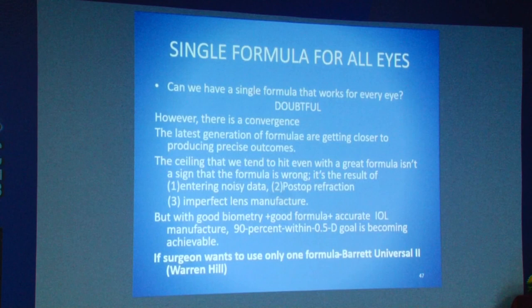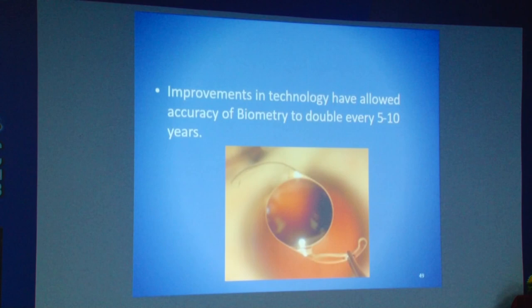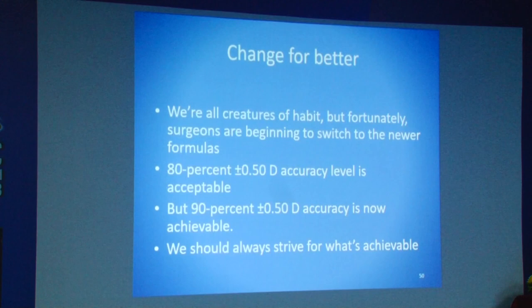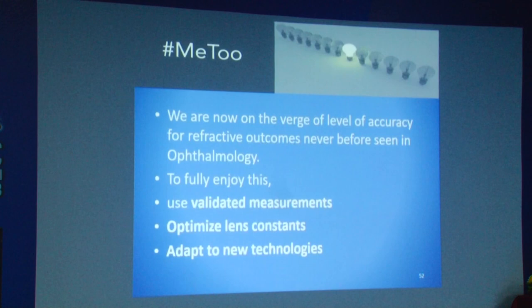Have we reached a stage where we can use a single formula for all eyes? The closest formula that fits the bill is Barrett Universal 2. These newer formulas are outperforming earlier generation formulas. Improvements in technology have allowed accuracy of biometry to double every 5 to 10 years. 80% accuracy was acceptable in older times, but now 90% accuracy is achievable — strive for what is achievable and not settle for what is acceptable. Smartness is learning not only from your own mistakes but from others' too. We are now on the verge of a level of refractive accuracy after cataract surgery never before seen in ophthalmology — but to enjoy this, use validated measurements, optimize your lens constants, and adapt to newer technologies.